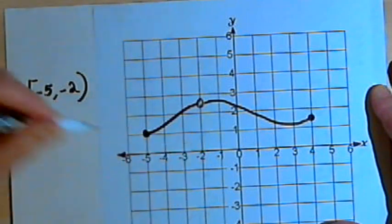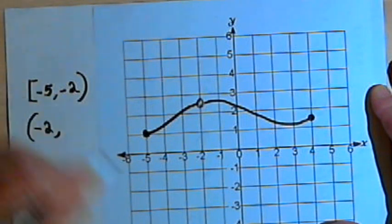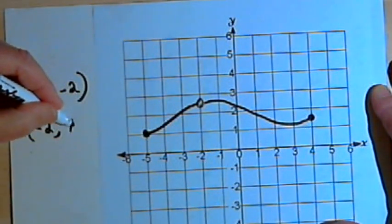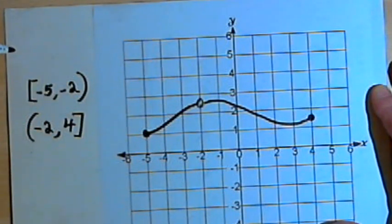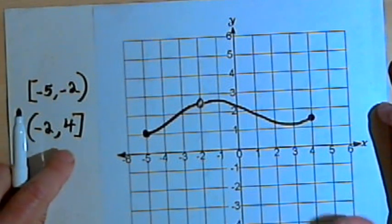And then it picks up again. It starts up again after negative 2, so I'll use a round parenthesis. And it continued up to and including 4, positive 4, so I'll put in this 4, and a square bracket. So I can say that there are two intervals over which the function was continuous, from negative 5 to negative 2, and then from negative 2 up until 4.